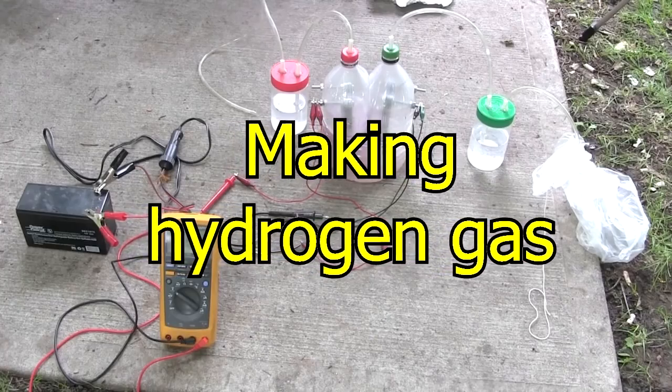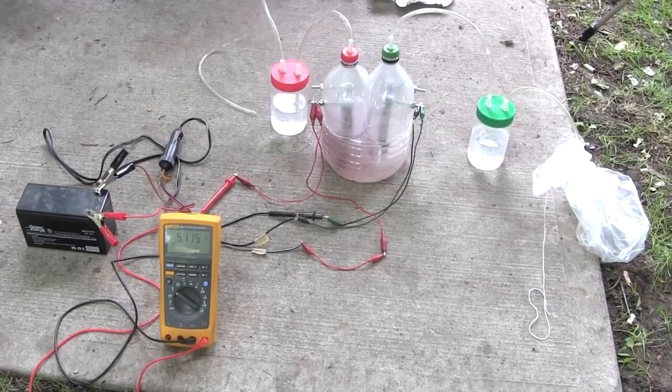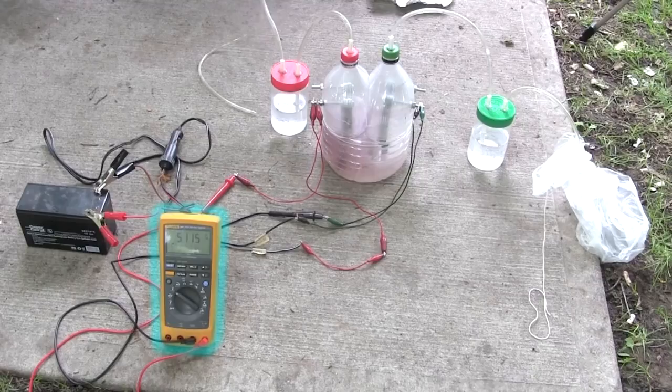Time to use the electrolyzer to put some hydrogen in the balloon. I'm being helped by a group of makers here in Ottawa called hack613.com. We start with it set up on a concrete slab. We have a 12 volt, 7 amp hour battery, a volt meter measuring across the electrolyzer.